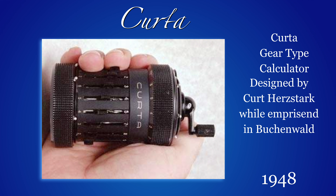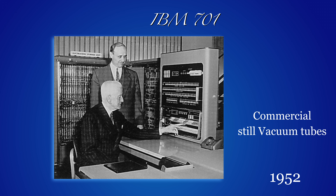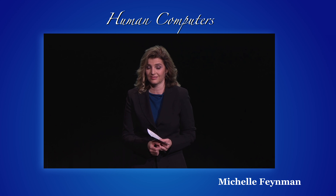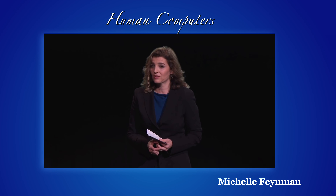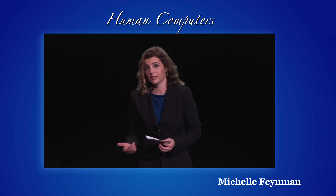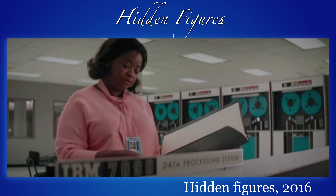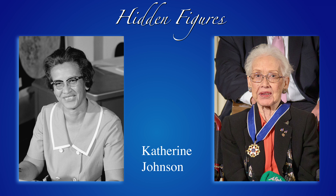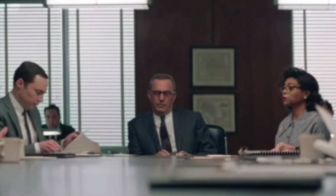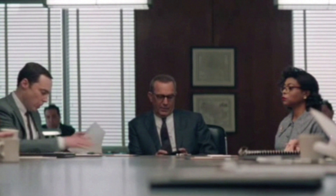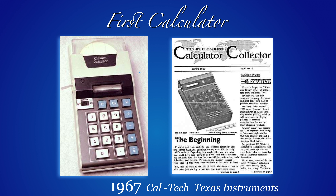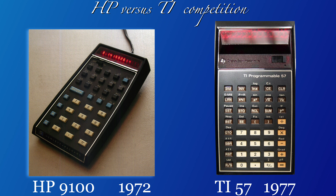In 1947, the transistor arrived. Around the same time, mechanical calculators were miniaturized — this is a Curta-type calculator. But then electronic computers took over. Michelle Feynman, daughter of Richard Feynman, tells about how human computers were used in the Manhattan Project, which the recent movie Hidden Figures also illustrated: mathematicians were doing computations by hand until computers took over at NASA. The first electronic calculators appeared in 1967 and have been in classrooms since.